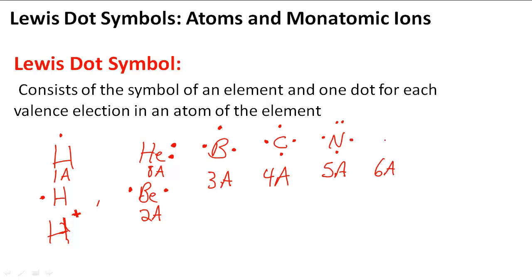6A has, as you can tell, probably 6 valence electrons. 1, 2, 3, 4, 5, and 6. And then 7A, we know that has 7 valence electrons. So F, we can use that as an example.